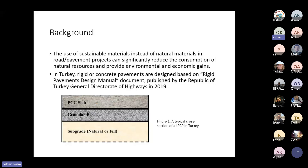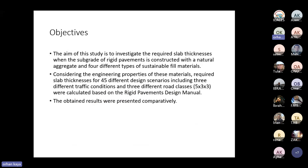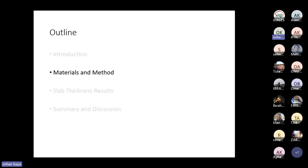A typical JPCP section consists of a Portland cement concrete slab at the very top and a granular base layer underneath the slab. The aim of this study is to investigate required slab thicknesses when the subgrade of rigid pavements is constructed with natural aggregate and four different types of sustainable fill materials. Required slab thicknesses for 45 different design scenarios—including three different traffic conditions and three different road classes—were calculated based on the rigid pavement design manual.